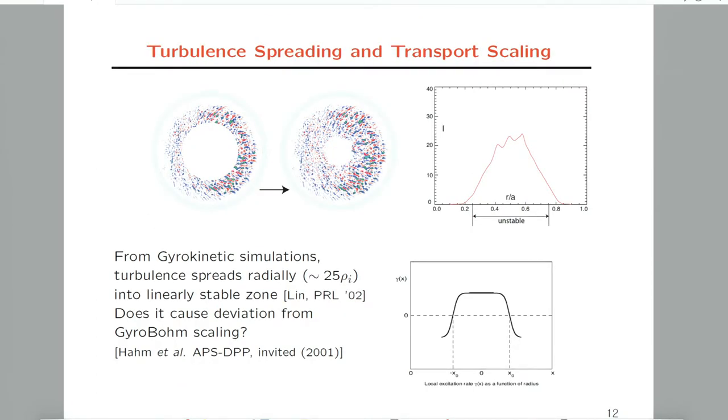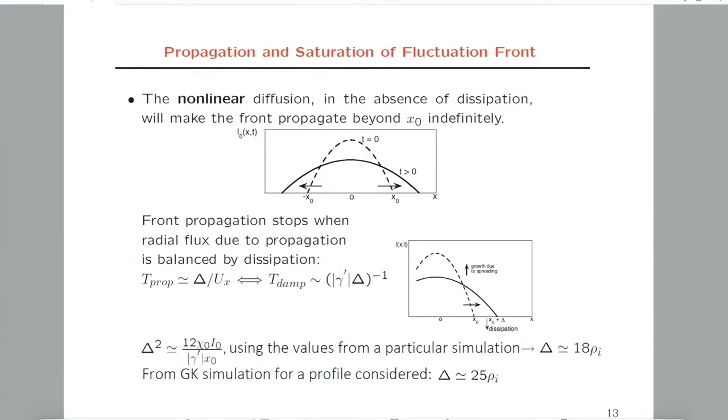We can do a numerical experiment of turbulence spreading by making the gradient of ion temperature rather simplified, so that we can understand the physics easily. By varying the width of this linearly stable zone—in other words, making dissipation stronger—we can see the scaling.